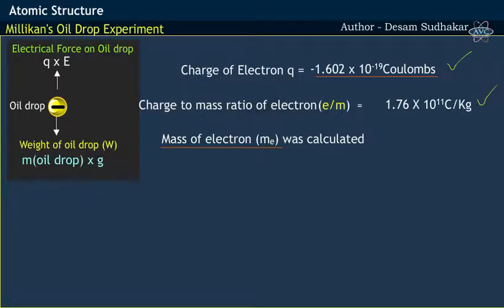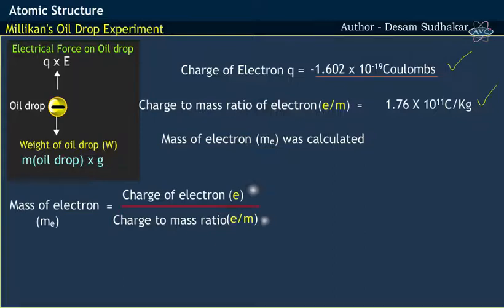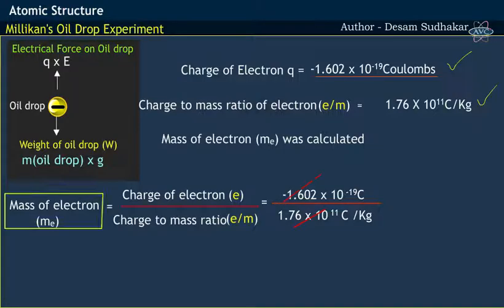On substituting these values in the equation E divided by E by M, we get minus 1.602 into 10 to the power of minus 19 divided by 1.76 into 10 to the power of 11. On further calculation, the mass of electron was found to have a value of 9.11 into 10 to the power of minus 31 kg.